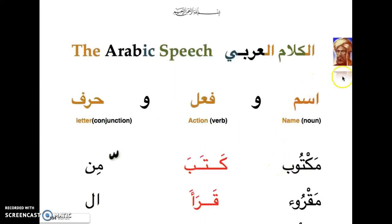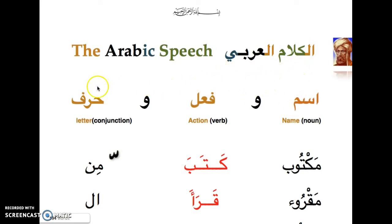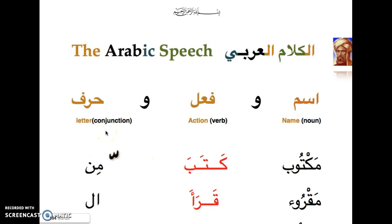If you remember what we talked about before when we introduced Abu al-Aswad al-Duali and what he said about Arabic speech — الكلام العربي — and those three things: اسم وفعل وحرف. We're in the حرف section now. حرف literally means letter or conjunction. We've dealt with two before: the شدة and the ألف لام. Today we're going to talk about more of them.